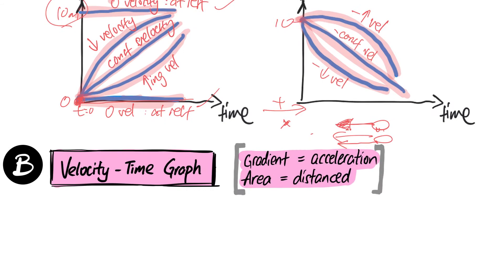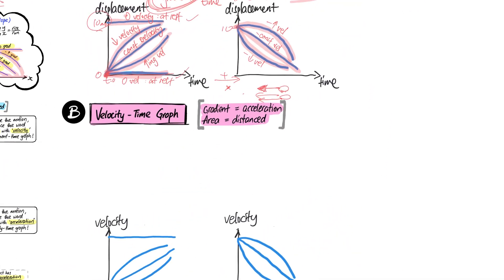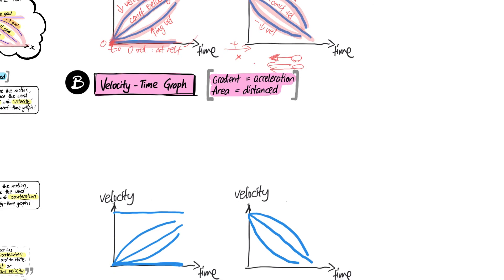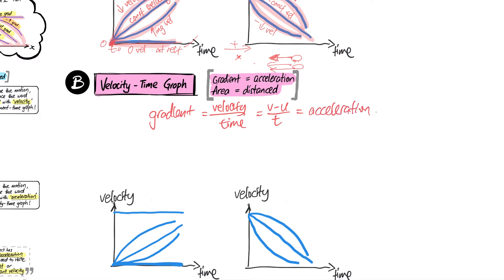Now let's look at the velocity-time graph. The graphs look similar, but the key difference is what the gradient means. For a velocity-time graph, the gradient is rise over run — that is, change in velocity over time. Change in velocity over time is final velocity minus initial velocity over time, which is acceleration. So the gradient of a velocity-time graph represents the acceleration of the object.